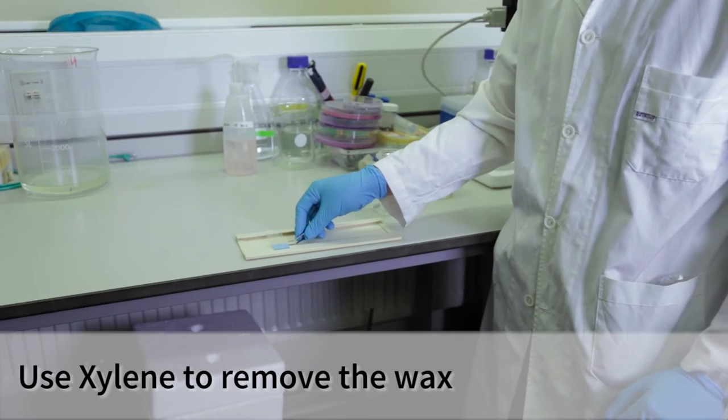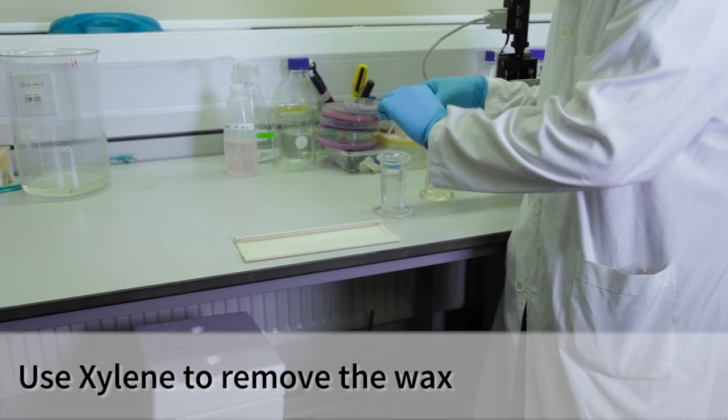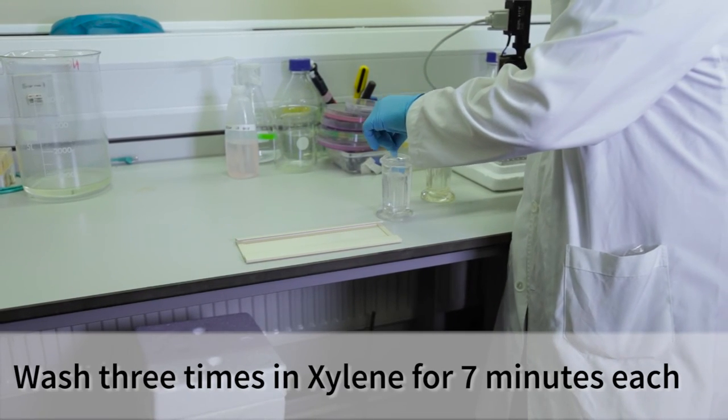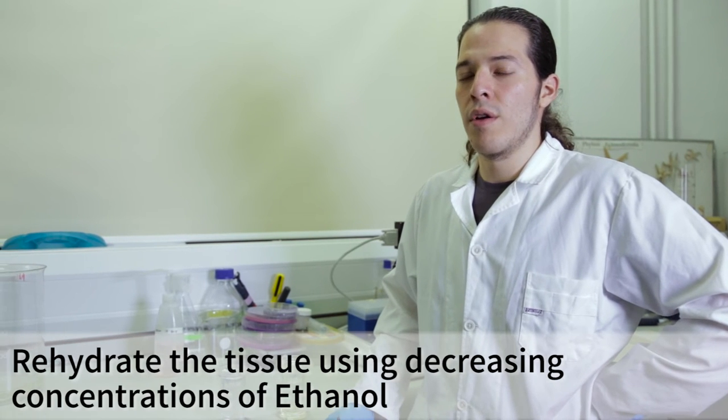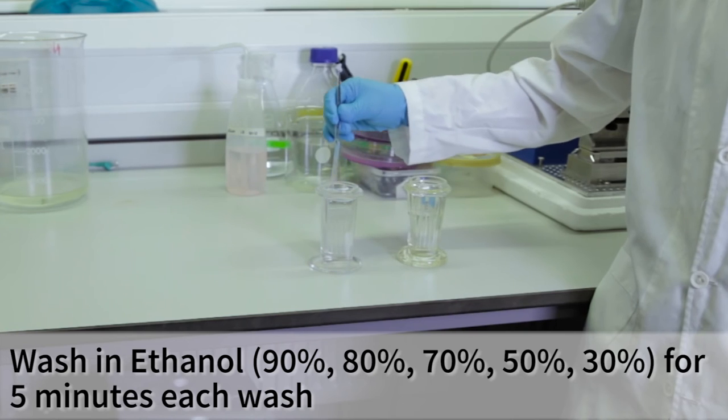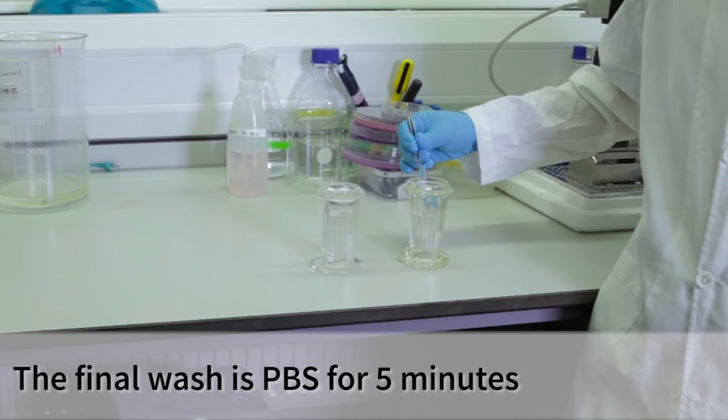We need to remove the wax that helped us to section the tissue. For this, we will use xylene. Now, we need to rehydrate the tissue. For this, we will use decreasing concentrations of ethanol. The tissue is rehydrated.